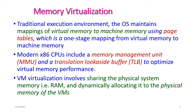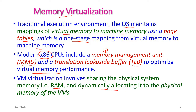In memory virtualization, the operating system traditionally maintains a mapping of virtual memory to machine memory using a page table — a one-stage mapping. Modern x86 CPUs include a memory management unit (MMU) and a translation look-aside buffer (TLB) to optimize virtual memory performance. Virtualization involves sharing physical RAM, which is dynamically allocated to virtual machines.